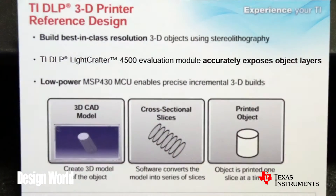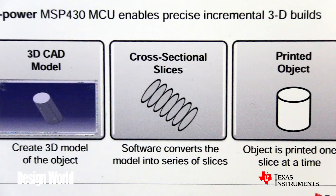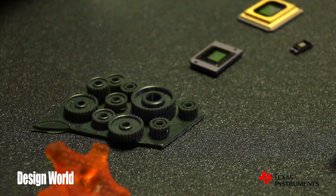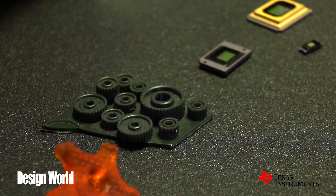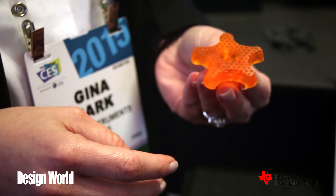The software in the system will then slice that information into layers. Each layer of information is sent to the DLP chip, and the DLP solution will expose a full layer of light one step at a time. It can be combined with microprocessing from Texas Instruments and motor drives, as each layer incrementally moves up or down, resulting in a 3D model printed one layer at a time using DLP technology.